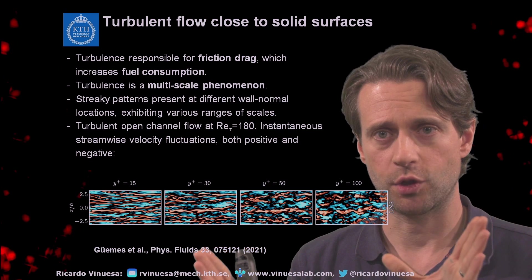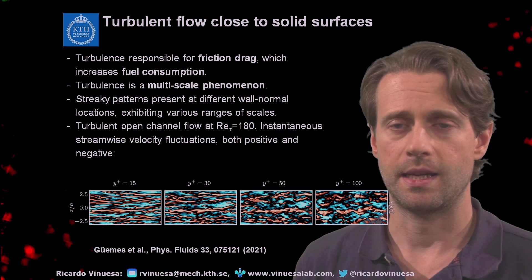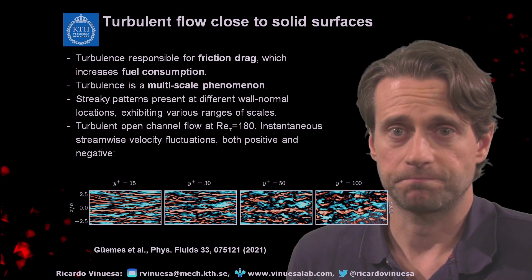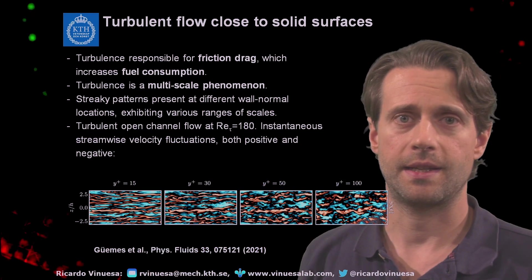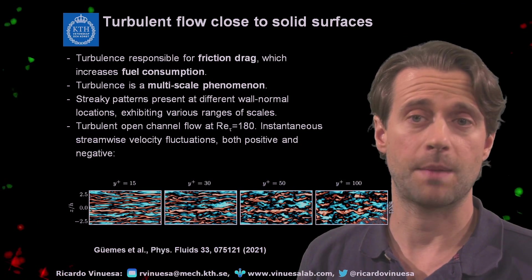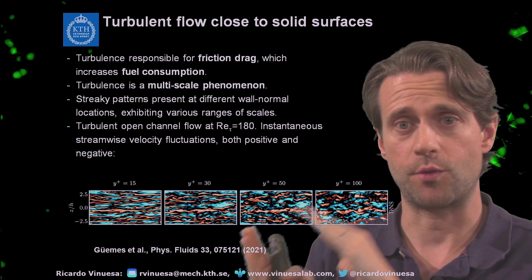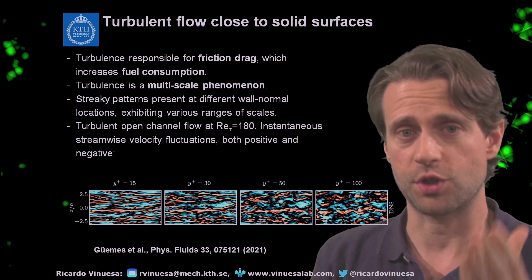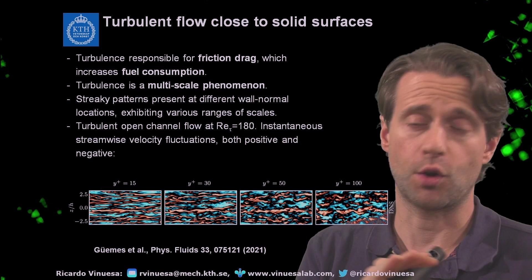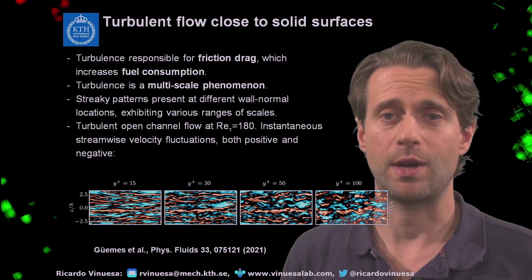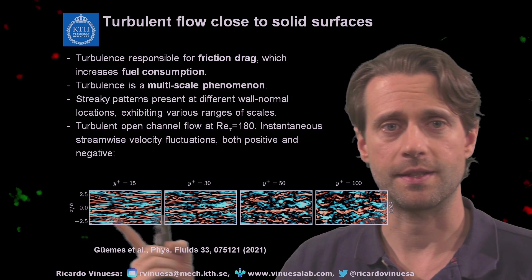We have streaky patterns which are present at different wall-normal locations. What I'm showing you here at the bottom is basically the flow in a turbulent channel — this is the horizontal plane, the streamwise velocity fluctuations instantaneously. Blue and red denote positive and negative fluctuations. This is a very low Reynolds number, friction Reynolds number of 180, but still you can see the characteristic patterns.